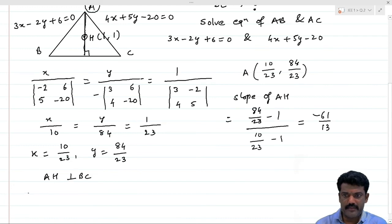But AH is perpendicular to BC, therefore slope of BC will be equal to 13/61.